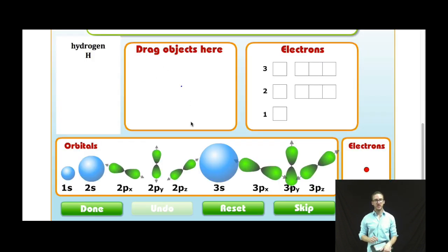Now let's use this simulation to help us better visualize what that means. I'm going to start with a 1S orbital. Again, this just describes the three-dimensional region of space where I'll most likely find my electron. For hydrogen, I only have one electron.